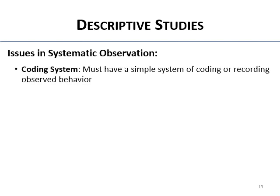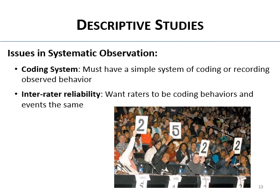Some issues with systematic observation: you have to come up with a coding system, and it needs to be simple because you're observing and recording at the same time. Another issue is interrater reliability — if more than one person is recording, you have to ensure all recorders or coders are doing it the same way. If one person gives a score of five when others give one, two, or three, that person has low interrater reliability.